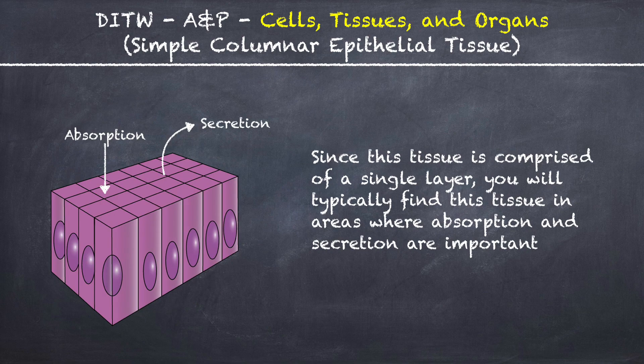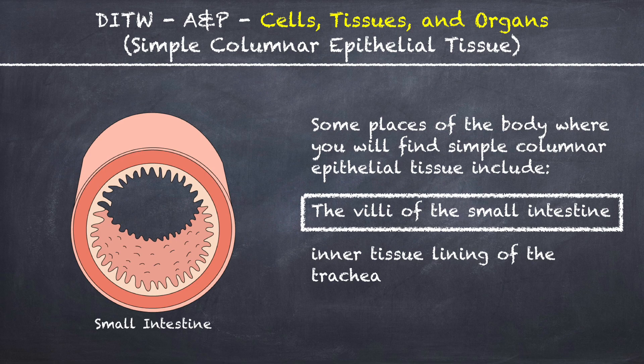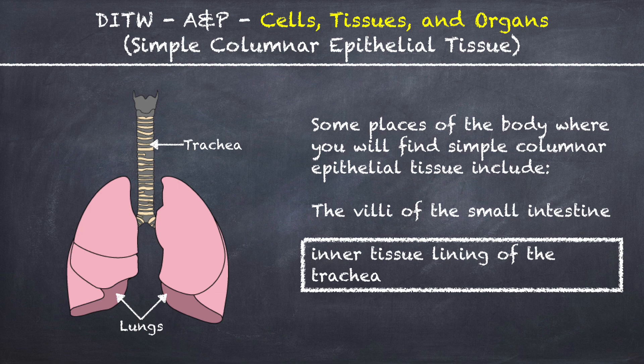Since this tissue is comprised of a single layer, you will typically find this tissue in areas where absorption and secretion are important. Some places of the body where you will find simple columnar epithelial tissue include the villi of the small intestine and the inner tissue lining of the trachea.